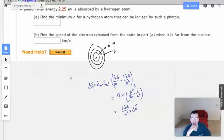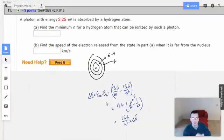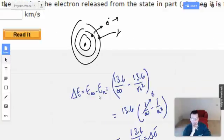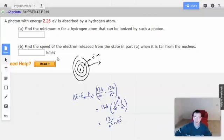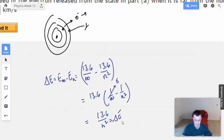So 13.6 over n squared equals change in energy. So what this is saying is an electron is going from level n to infinity. We're going to use up as much energy as possible. We have 2.25 to use.